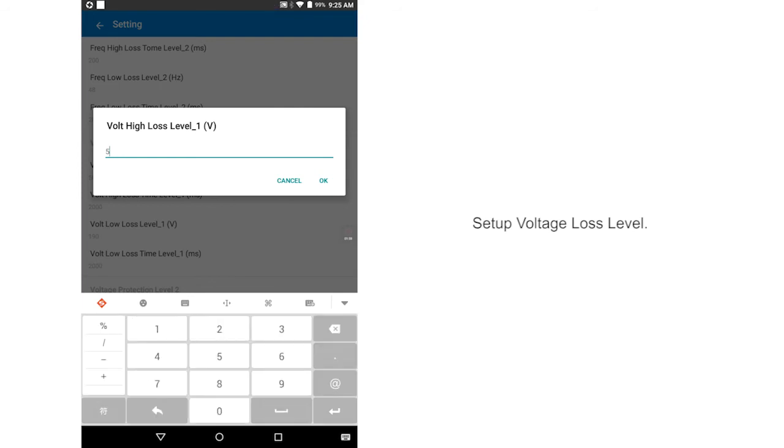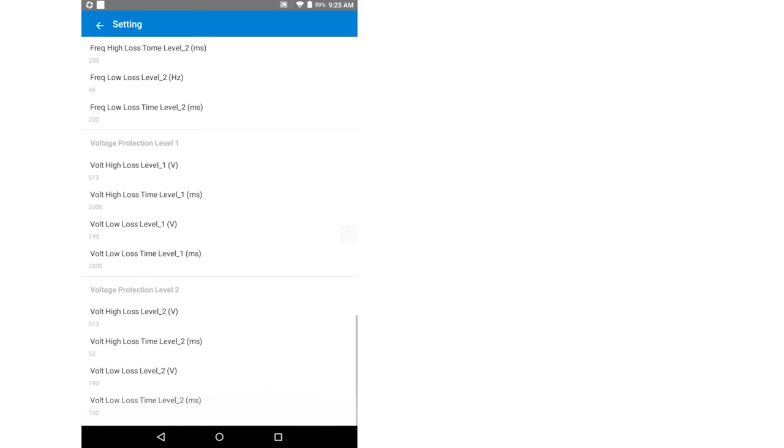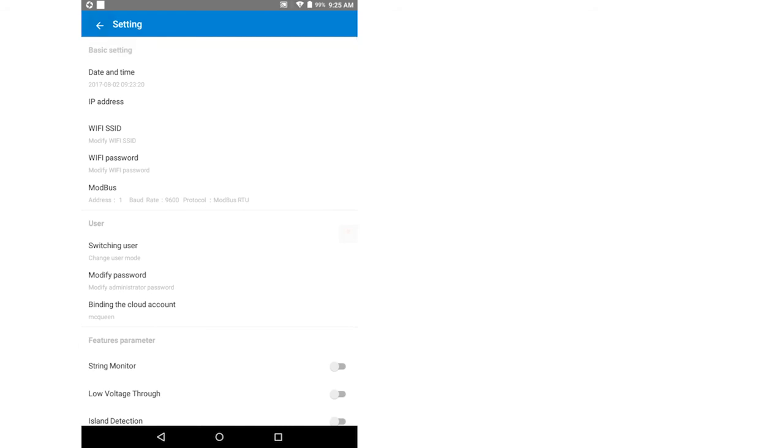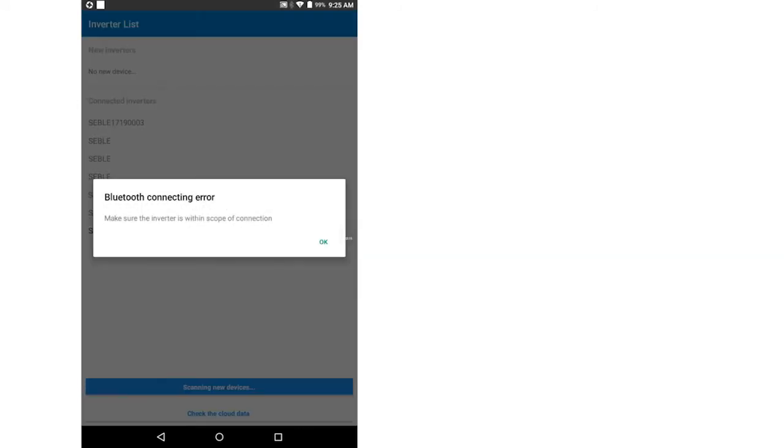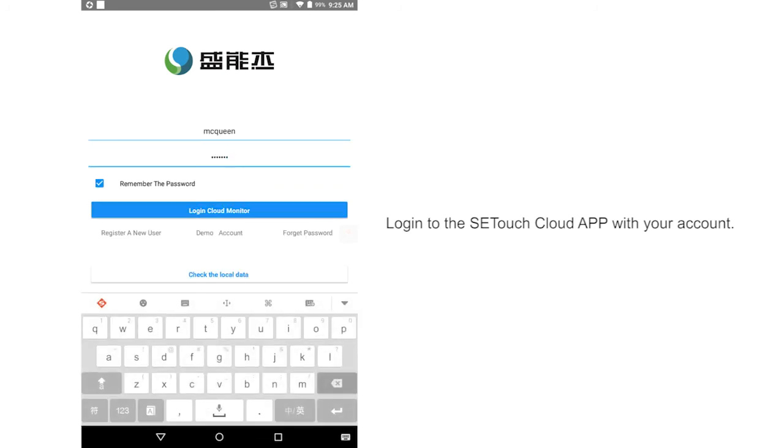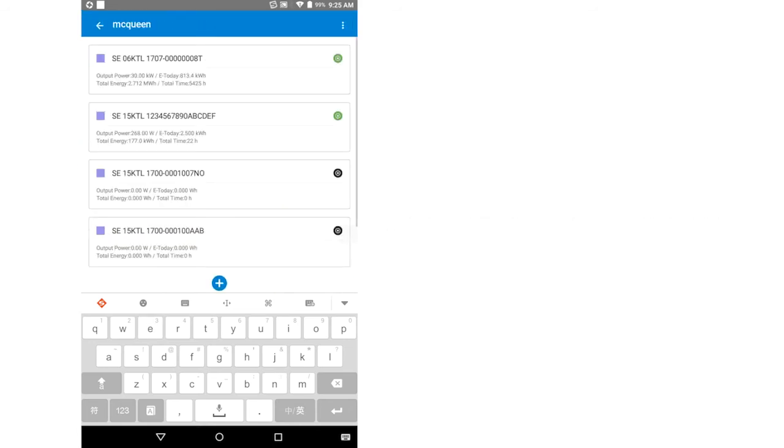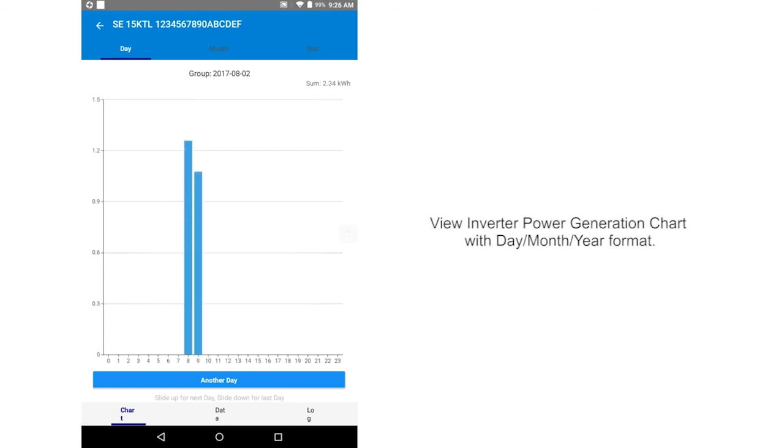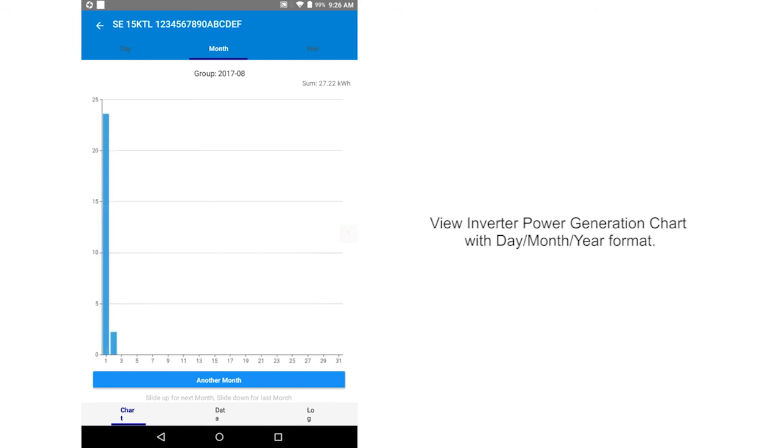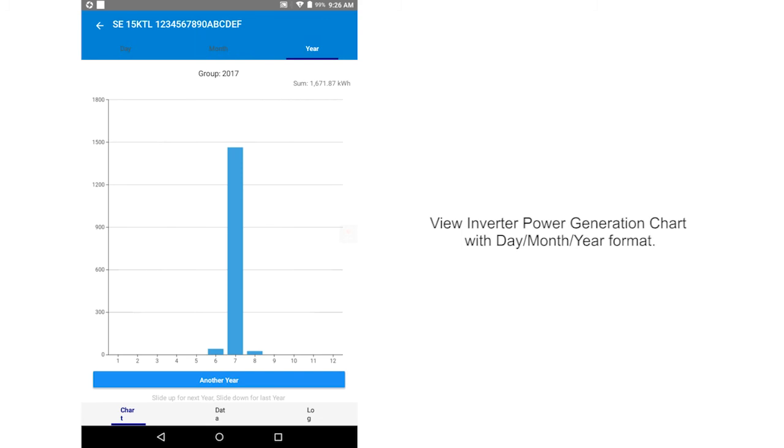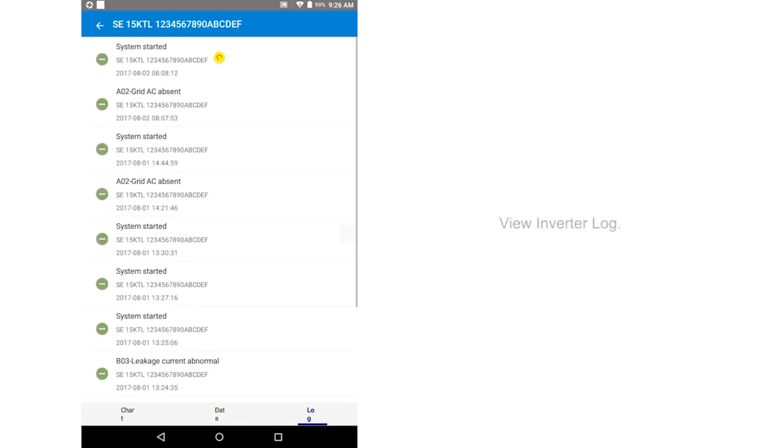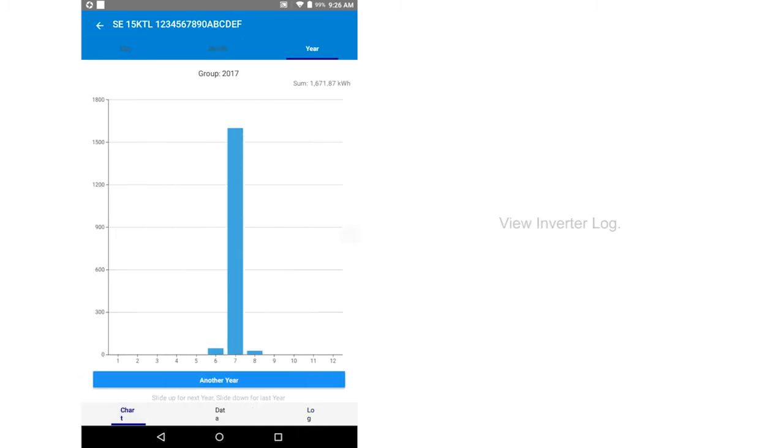Setup Voltage Loss Level. Login to the SetTouch Cloud app with your account. View Inverter Power Generation Chart with Day-Month-Year Format. View Inverter Parameters and Inverter Log.